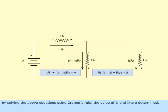By solving the above equations using Kramer's rule, the value of I sub 1 and I sub 2 are determined.